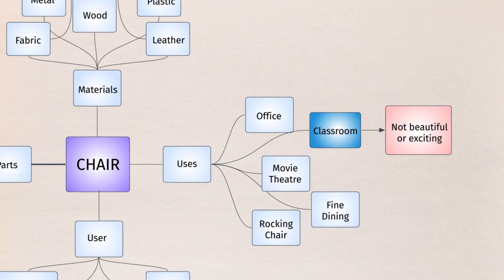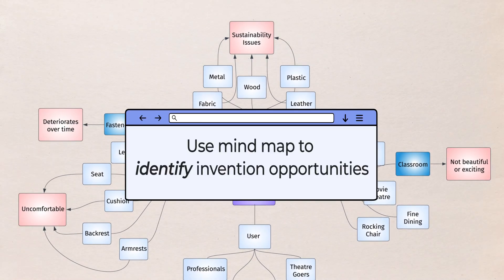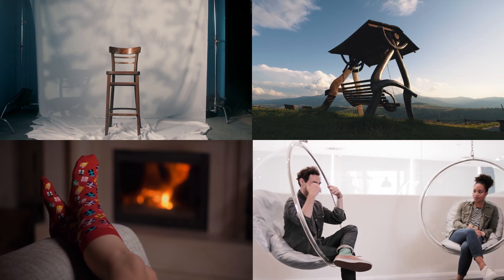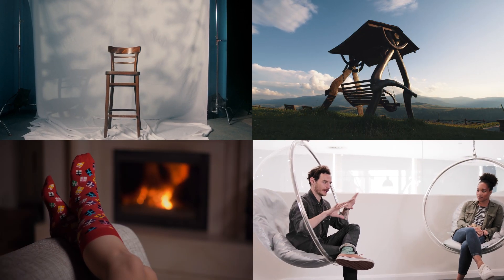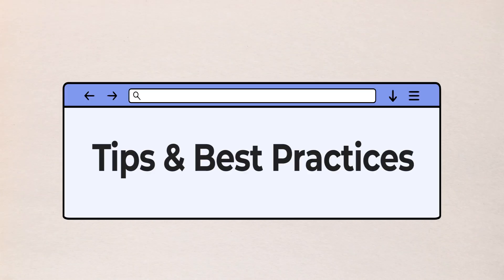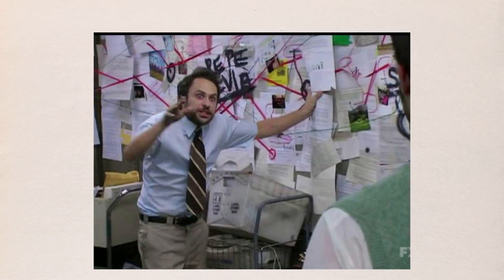When we take a step back to look at the bigger picture, we can see how mind mapping helps us identify several invention opportunities, such as chairs that are more durable, comfortable, sustainable, or exciting. However, we can also see how quickly mind mapping can become quite complex. Here are some tips and best practices to ensure your mind map doesn't look like this.